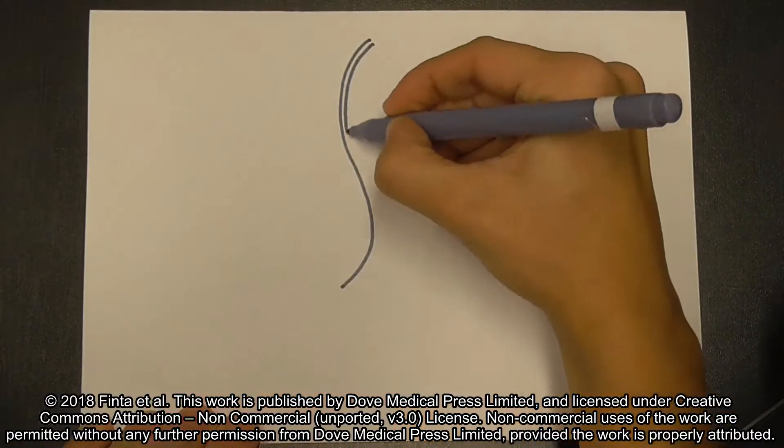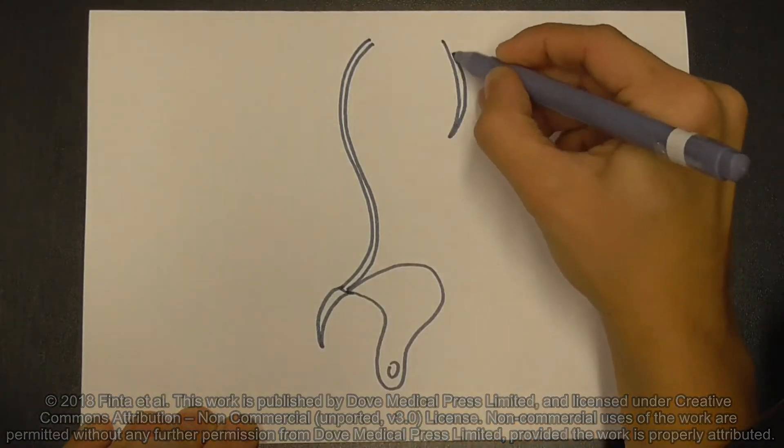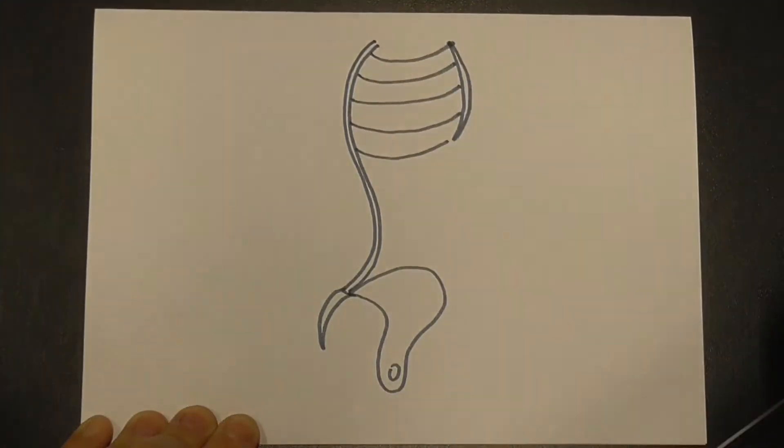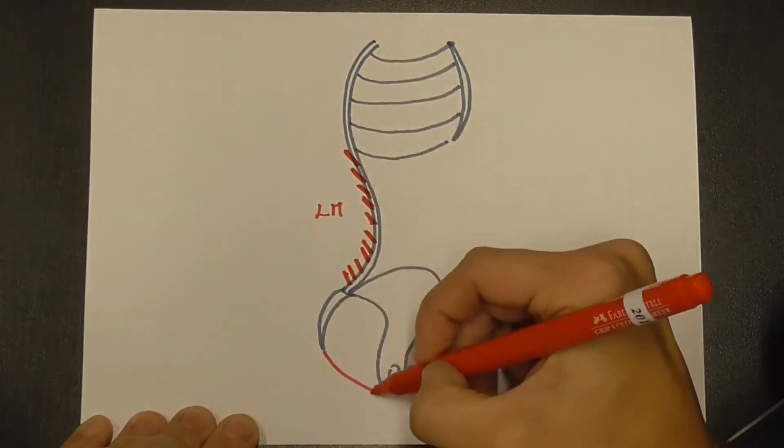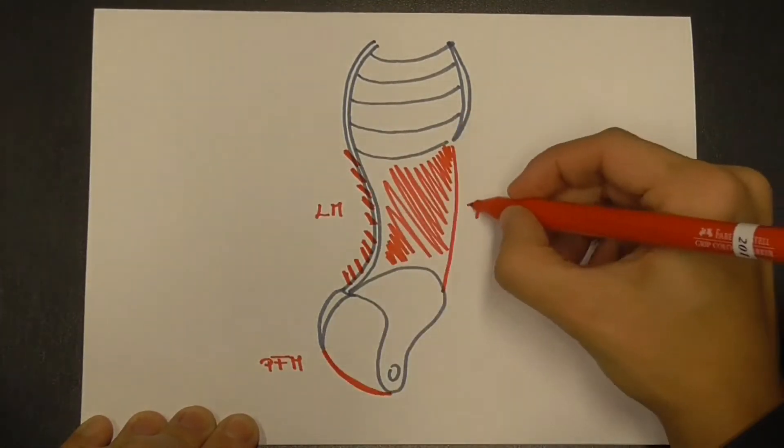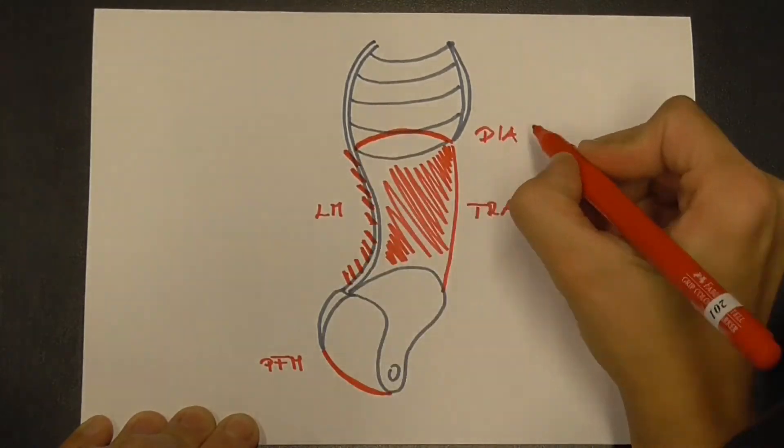Let's see the local stabilizing muscles of the lumbar spine. Here you can see lumbar multifidus muscle, pelvic floor muscles, transversus abdominis muscle, and diaphragm muscle at the top.